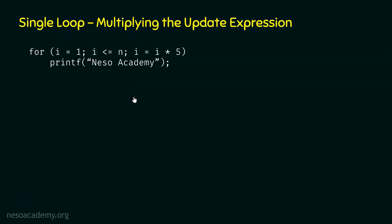We know how to find the time complexity of a loop from our previous lectures. The time complexity of a loop is the same as the frequency count of the innermost instruction of the loop. In this loop, the innermost instruction is Printf. Our job is to determine the frequency count of this statement to obtain the time complexity. Frequency count is the same as finding how many times an instruction is executed.